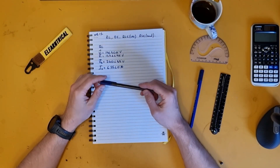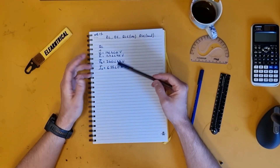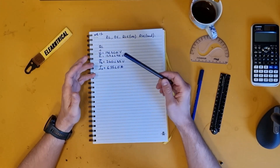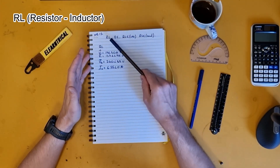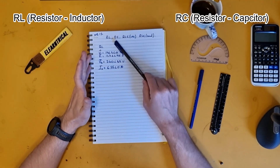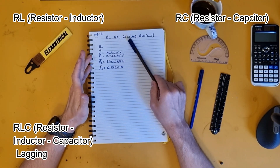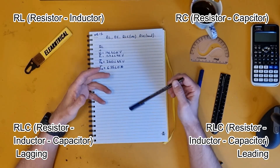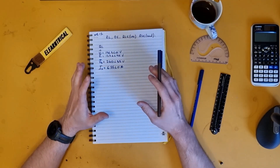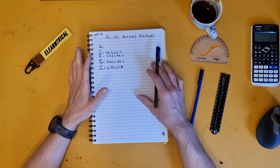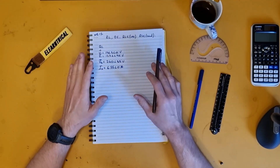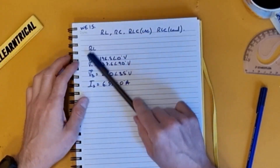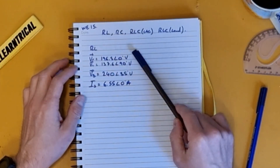In this video we're going to deal with how to draw phasor diagrams — first for an RL circuit, then an RC circuit, then an RLC circuit that's lagging, and an RLC circuit that's leading. If you're looking for more detail on how to do the calculations, that's going to be in another video. This is purely dealing with how to draw the phasor diagram.